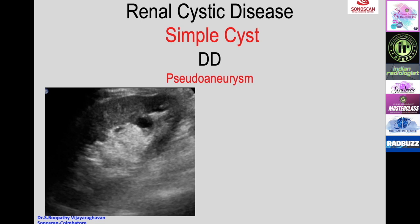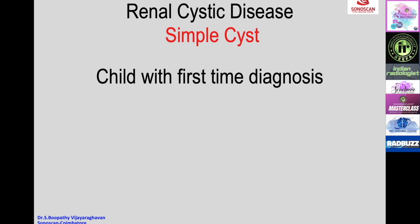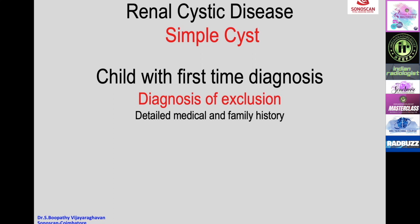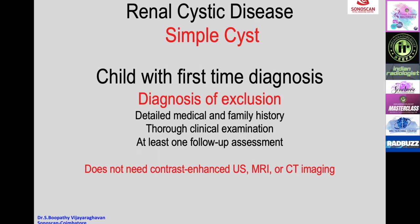Another differential is pseudoaneurysm: on color Doppler, circular flow inside a apparent cyst indicates it is a pseudoaneurysm. Whenever a cyst is seen anywhere in the body, a vascular lesion must be ruled out by applying color Doppler. When a child presents with a cyst for the first time, it is a diagnosis of exclusion and detailed medical and family history must be taken to rule out an initial part of a larger disease like polycystic kidney. At least one follow-up assessment is needed; contrast-enhanced ultrasound, MRI, or CT are not needed for diagnosis.